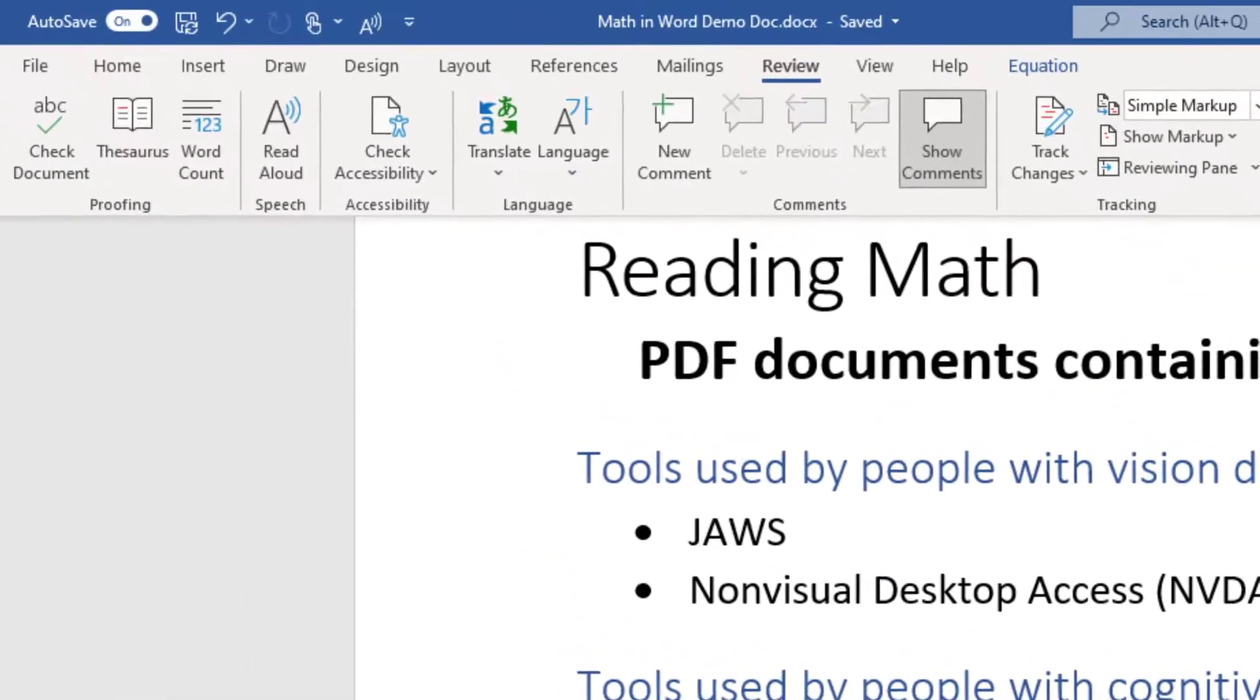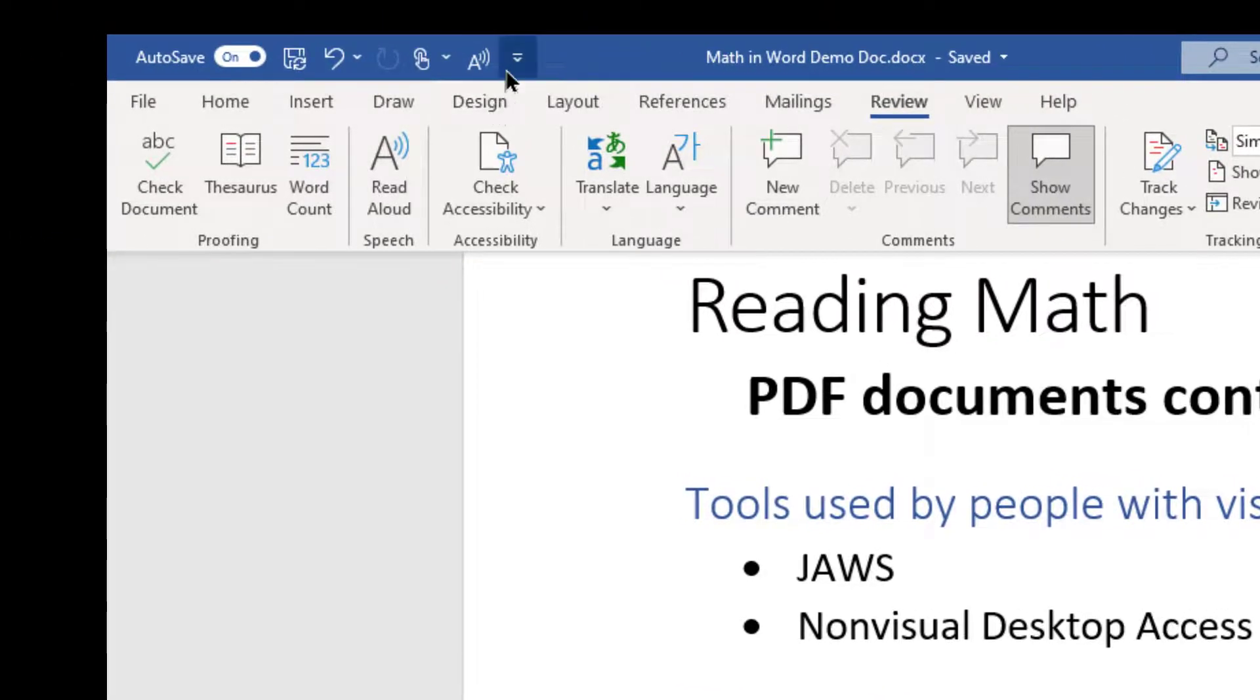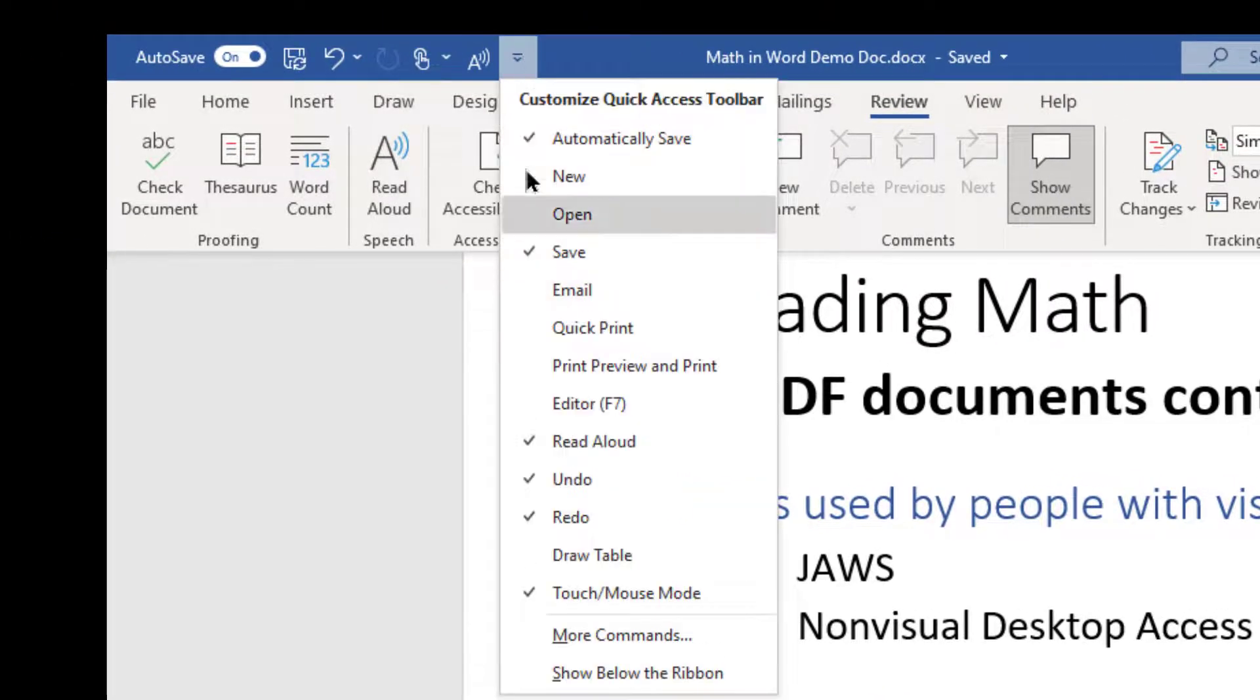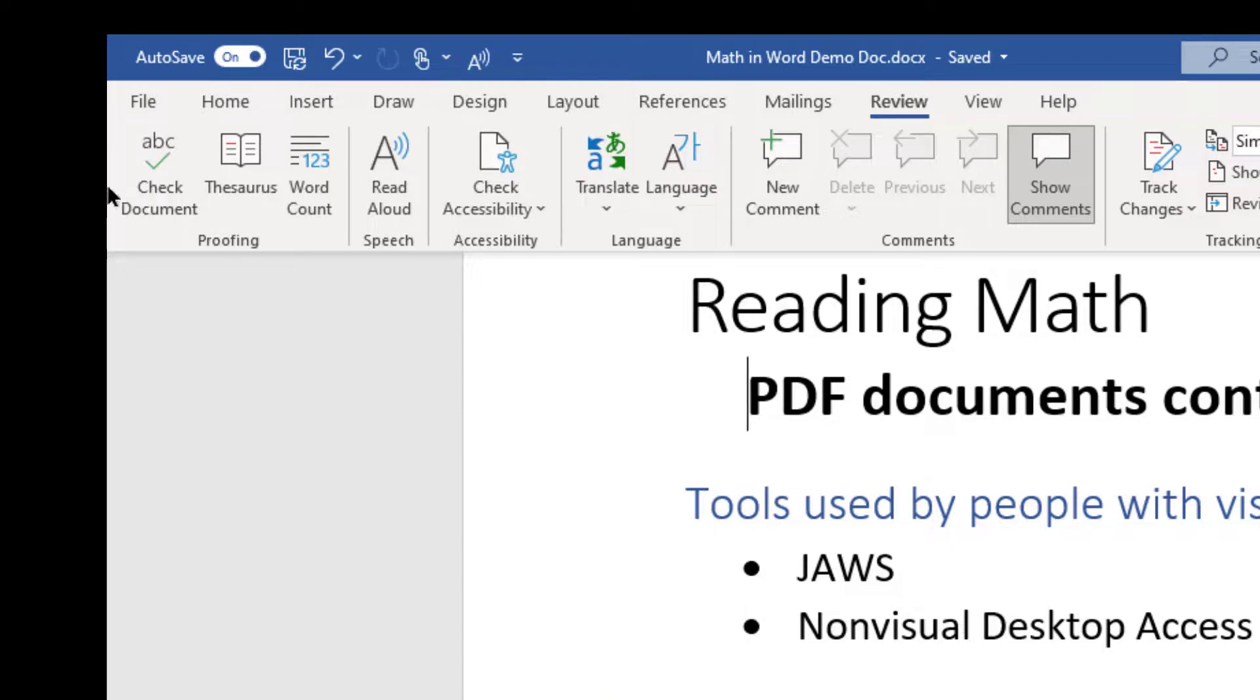So that is pretty good. And again, it's pretty easy to get to: Review, Read Aloud, or you can create a shortcut just by clicking on this little button here, and clicking Read Aloud. So it's not there, I click it again, it's there, and anything I want to read, I can just click, and it'll read it to me out loud.